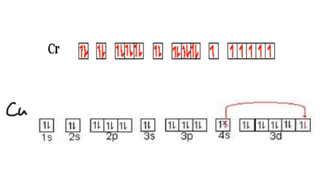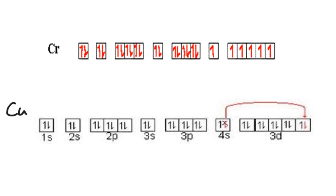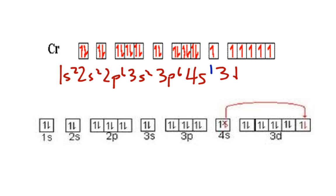And so the resulting diagrams are these here. Chromium is 1s² 2s² 2p⁶ 3s² 3p⁶ 4s¹—that's the change—and then 3d⁵. That's where the stability comes in, and this half-filled is more stable than having only these four filled.